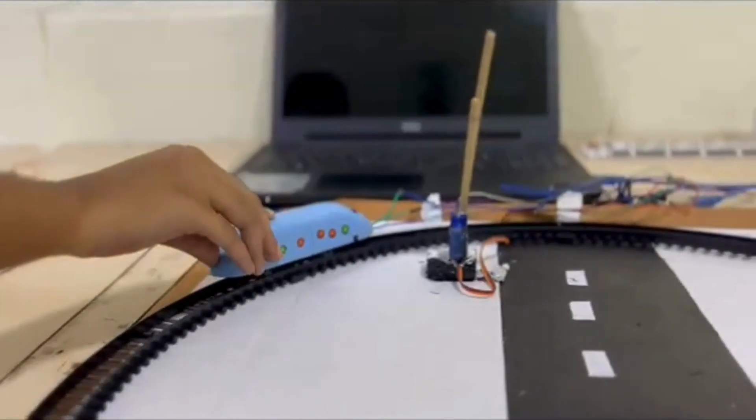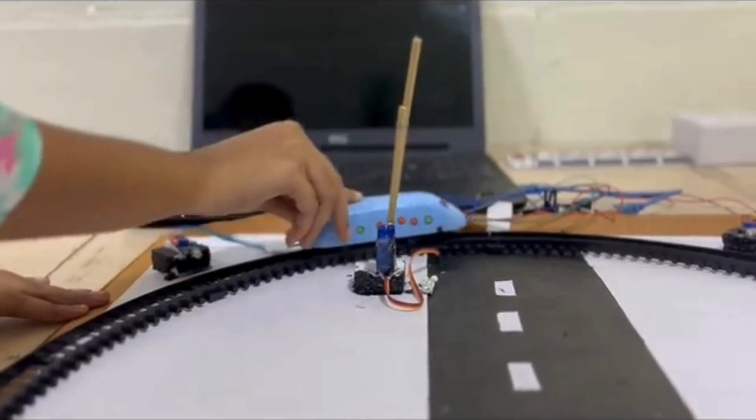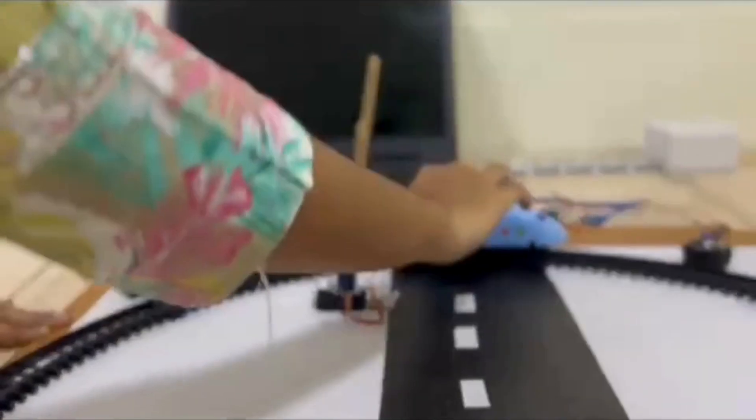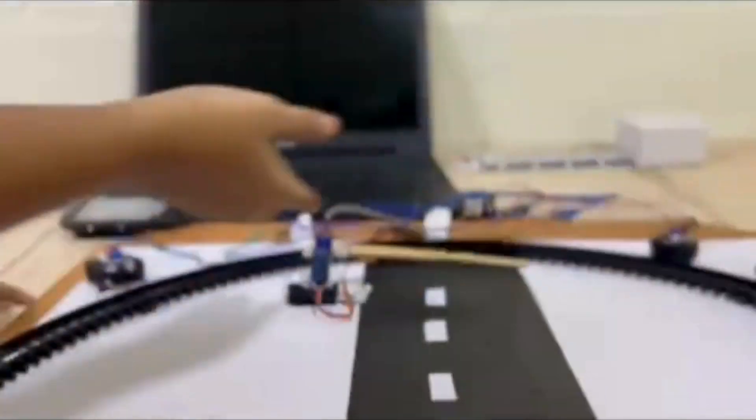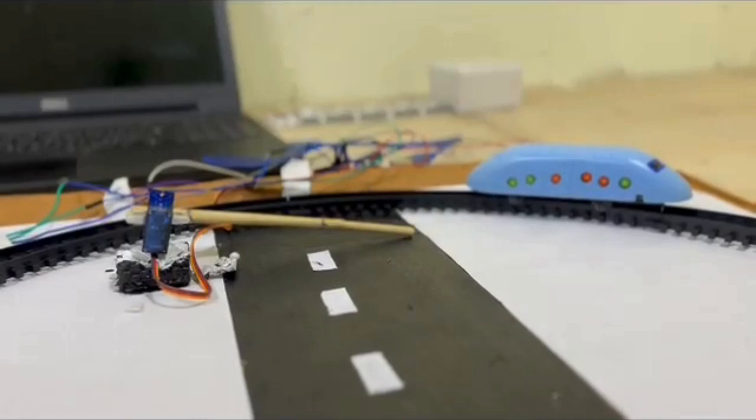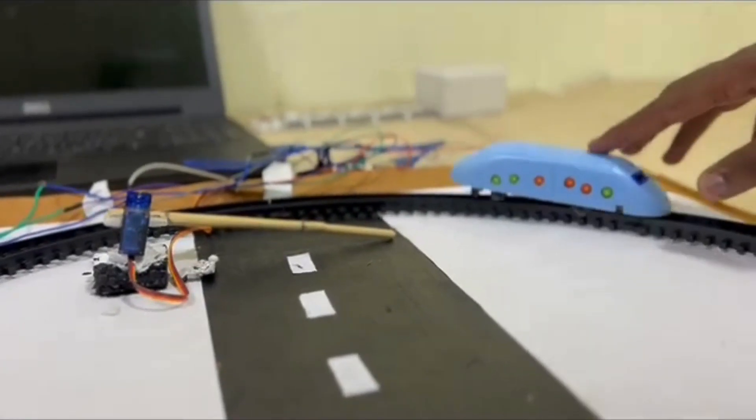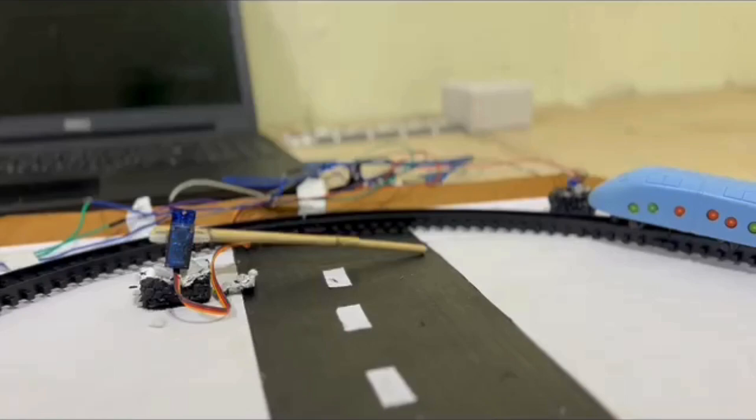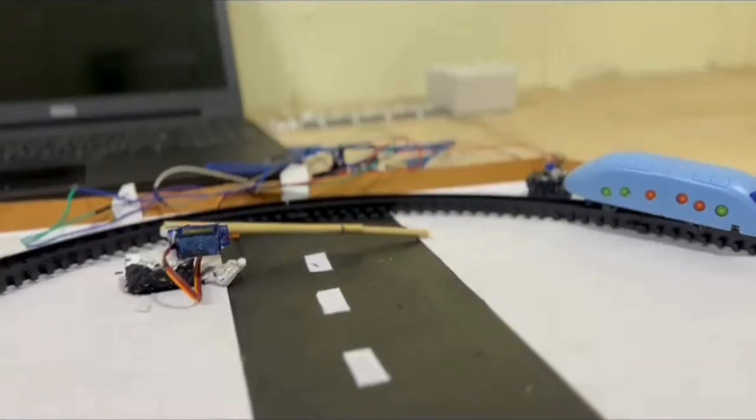Third, gate control mechanism: If it is determined that a train is approaching and it's necessary to close the gates, a control mechanism is activated to initiate the closing process.